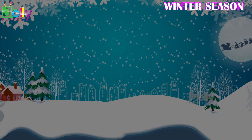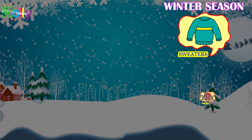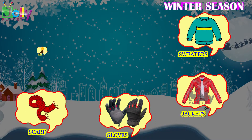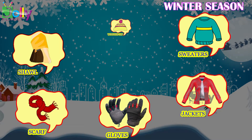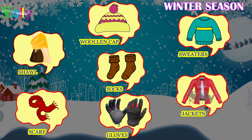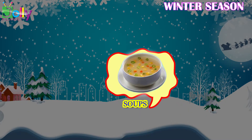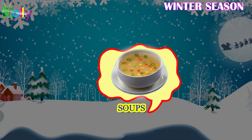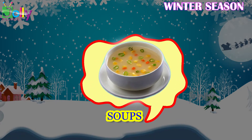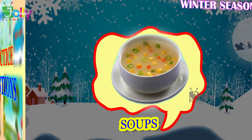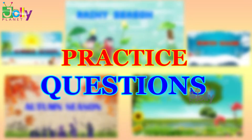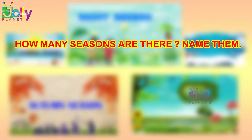In winter, the weather is cold. In some parts of the world we see snowfall, frost, and ice. We wear woolen clothes such as sweaters, jackets, gloves, scarf, shawl, woolen cap, and socks to keep ourselves warm. We like to eat hot food like soups and hot dogs during winter.